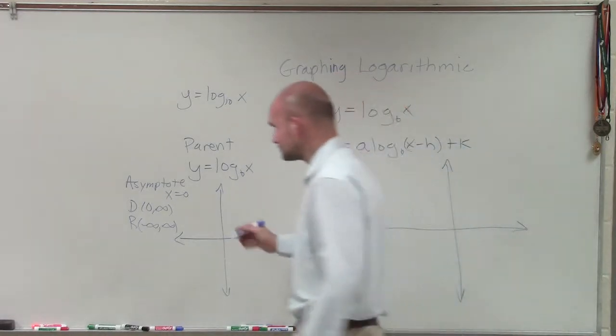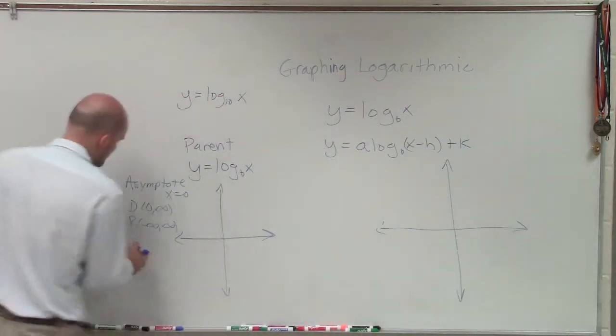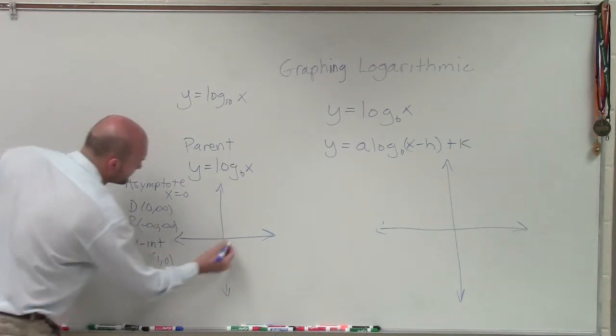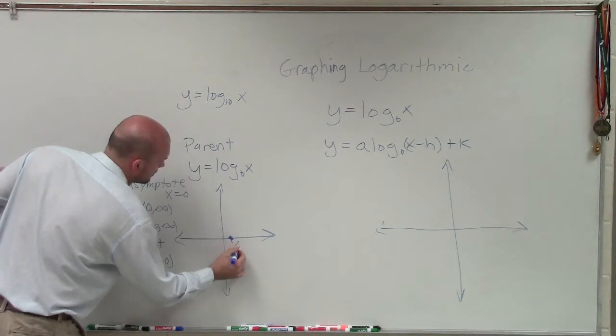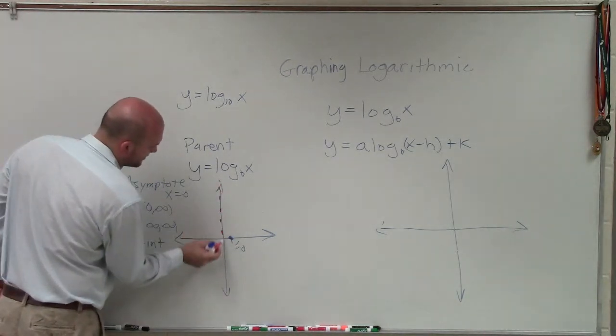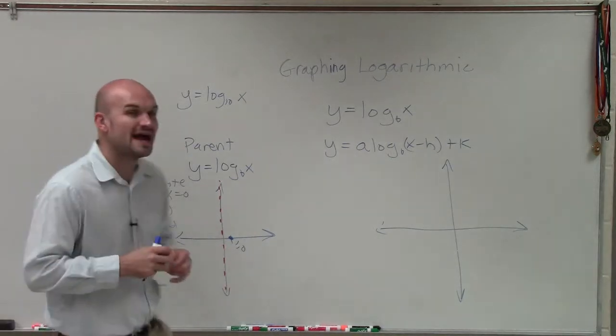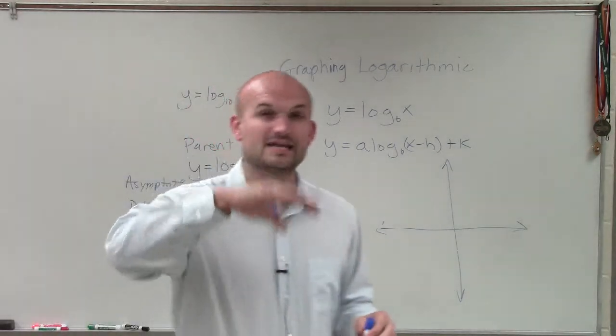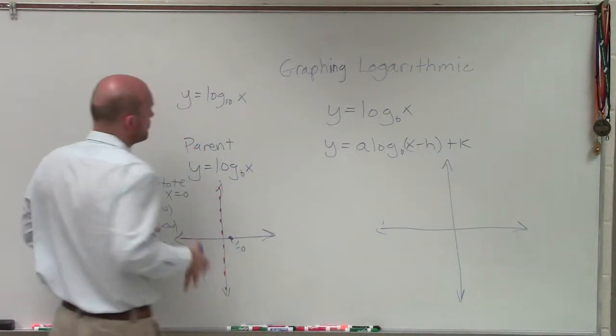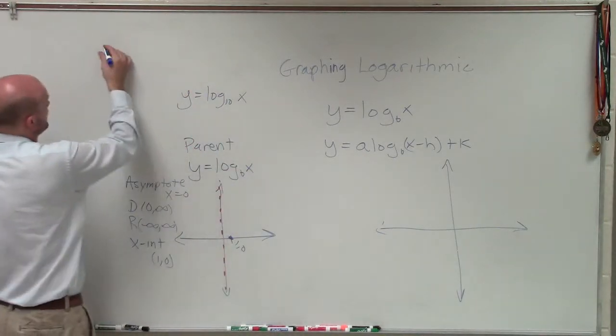However, another point that they're all going to have is an x-intercept at 1 comma 0. So now, these are some characteristics that we're going to have. However, how fast our graph is going to increase after it's passed the x-intercept all really depends on our base. So what we're going to have to do when doing this is we're going to have to create an xy table.